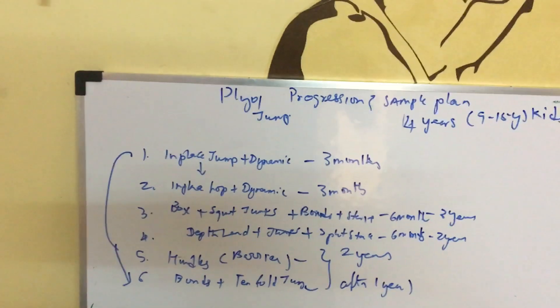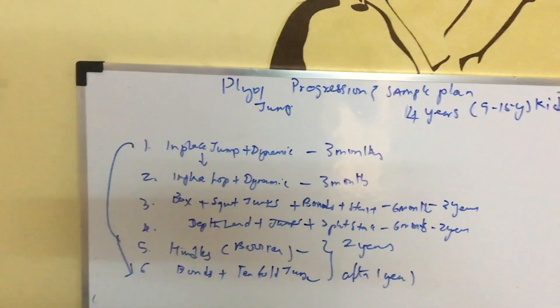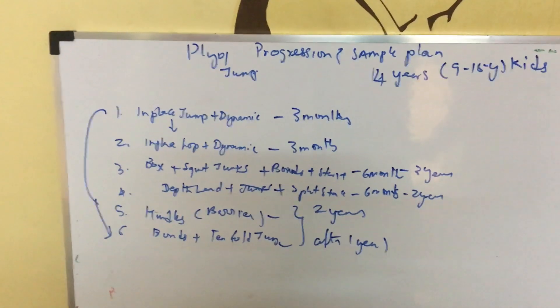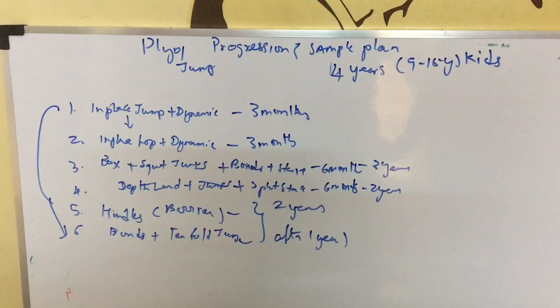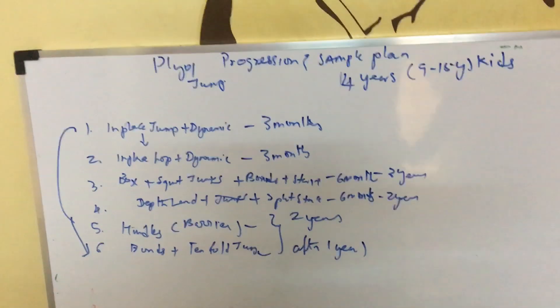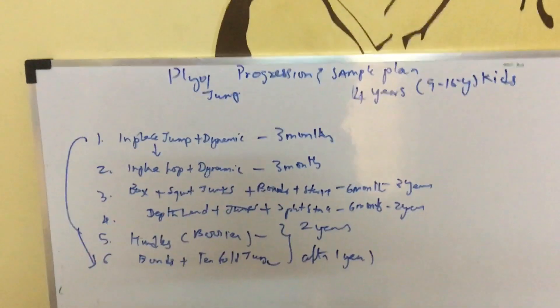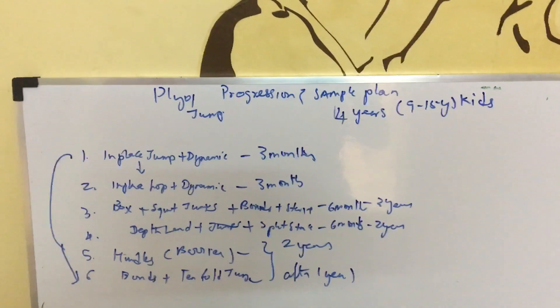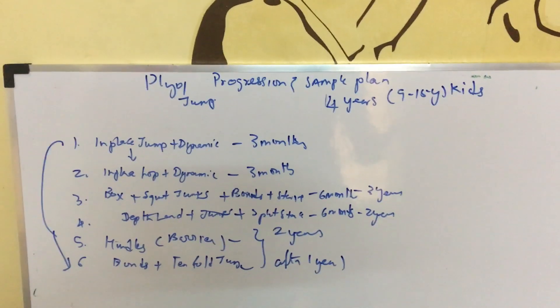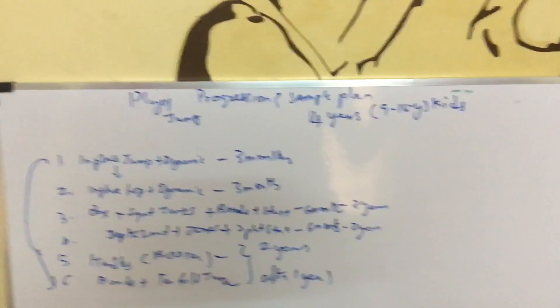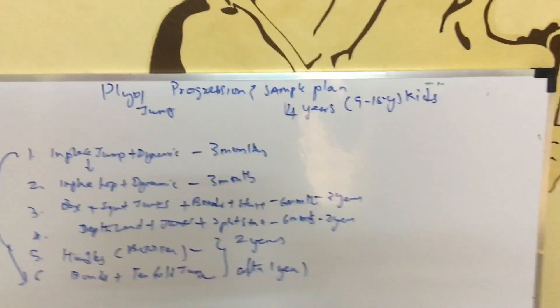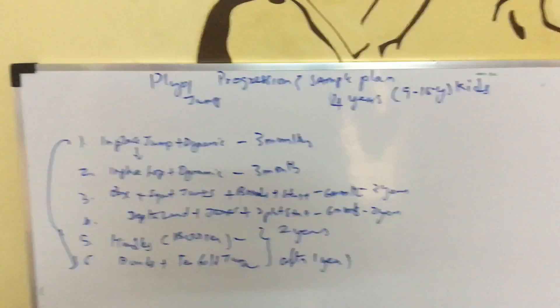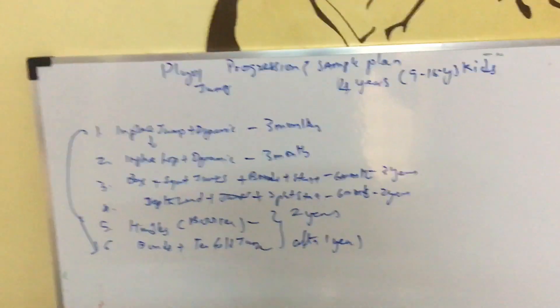Once the progression is complete—this takes around three to four years—we move to more explosive plyometrics. This includes shock method training, depth landing, depth jumps, split jump progressions, hurdle barriers, and antagonist facilitation shock method. The entire progression lasts four to five years, bringing them to a high level at age 15. Extensive work and depth jumps are done during these years, but intensification happens only after five years of training.